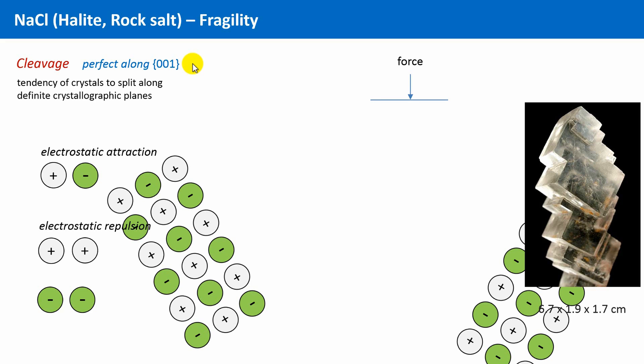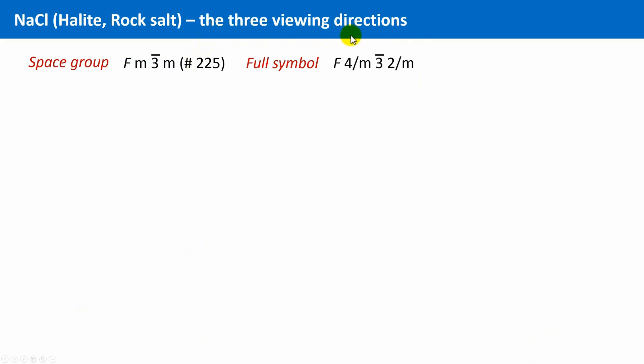A further point, which I would like to practice with you once more, are these viewing directions. And sodium chloride is a good example to practice this in 3D. The full space group symbol is given here. If you orient the crystal structure accordingly, and I would suggest that you reproduce this in VESTA, then we should be able to identify the symmetry elements specified along the three directions.